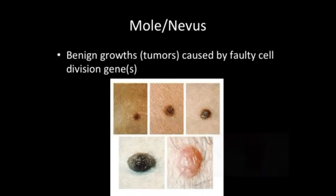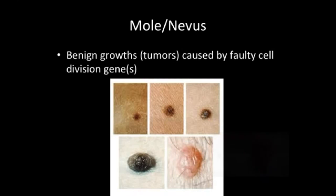Most people have 20 or more moles on their skin. These are benign tumors caused by faulty cell division genes, and you can see in the picture the different forms moles can take on the skin. They're often pigmented, associated with melanocytes, but sometimes they're not. Moles are pretty harmless — if you want one removed, see a dermatologist. However, they are susceptible to ultraviolet damage from the sun, which could cause them to become cancerous. So it's very important for people with many moles to protect themselves from the sun's damaging ultraviolet rays.